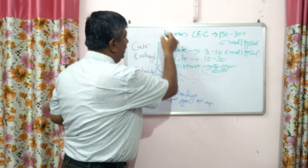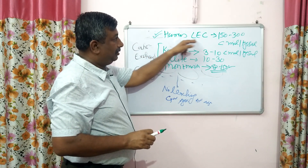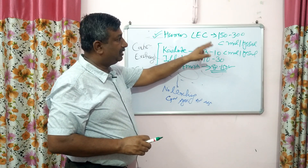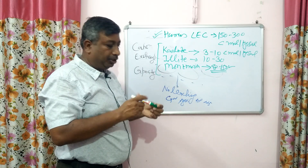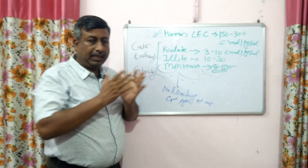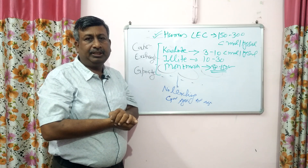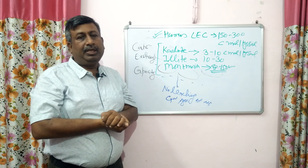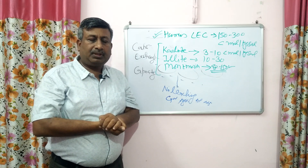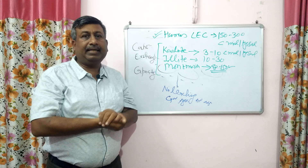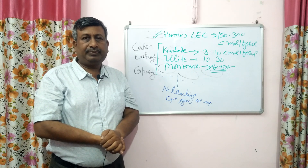Now you can see the difference in CEC between these clay particles and humus. When we increase the organic matter content, humus increases, CEC increases, leaching is decreased, and nutrient availability is greater. In organic soils, CEC is higher, nutrient availability is more, and leaching is reduced — overall soil fertility is increased. This is the very important role of humus in reducing nutrient leaching by increasing cation exchange capacity. Thank you very much.